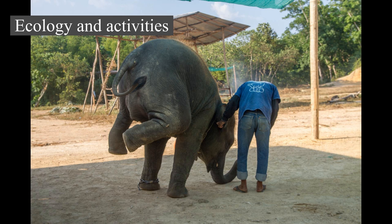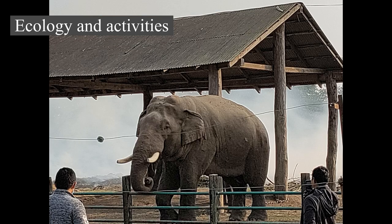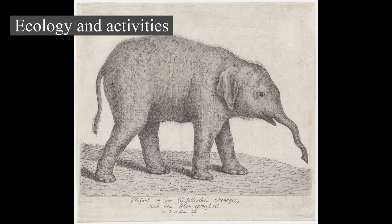At Hluhluwe-iMfolozi Game Reserve, South Africa, introduced young orphan elephants went on a killing spree that claimed the lives of 36 rhinos during the 1990s, but ended with the introduction of older males. The size of adult elephants makes them nearly invulnerable to predators. Calves may be preyed on by lions, spotted hyenas, and wild dogs in Africa and tigers in Asia.